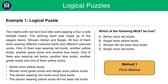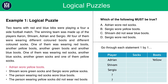Now we're going to use the fill-in method for these questions. The first thing you should do is create a table with one column for the player, one column for socks, and one column for boots, and put in the information you already know. We know that information is given about Adrian, Shivam, and Sergio, so we put these three names in the first column. We know Adrian wore yellow boots, so we can put yellow boots in his row.